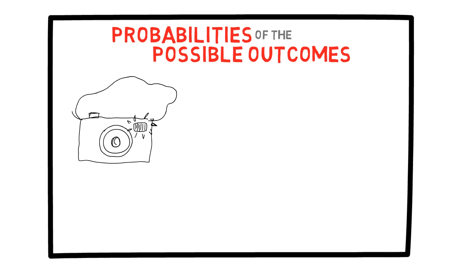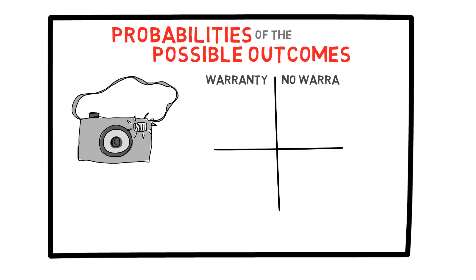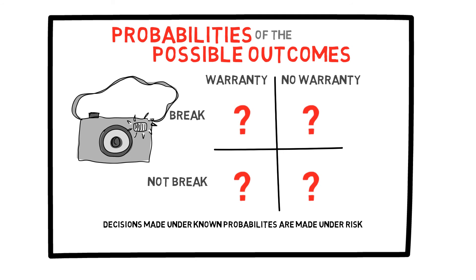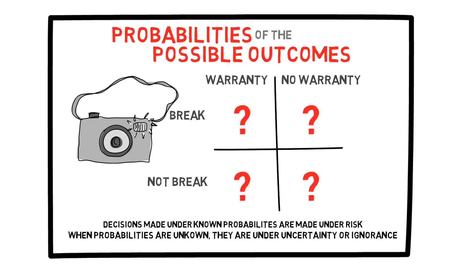For example, when you buy a camera, what are the possibilities? It is helpful to write them down in a table such as this. Either you want to buy insurance or not buy it, and you will either break the camera or won't. You might not know the probability of the camera breaking — this can happen a lot in real-life scenarios. Sometimes you will be able to obtain the probabilities, and other times you will not. In decision theory, decisions made under known probabilities are said to be made under risk. When the probabilities are unknown, it is often called a decision under uncertainty or ignorance.